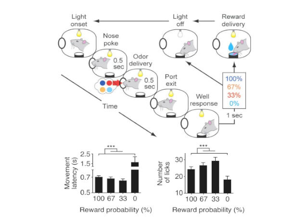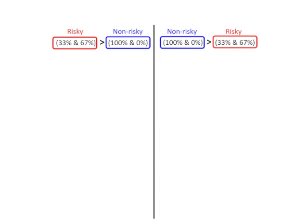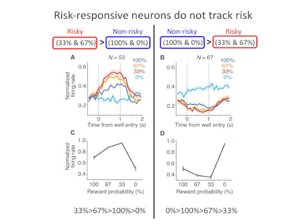We next tried to identify risk-responsive neurons during the one-second outcome anticipation period. Here, risk was defined as reward variance — thus risk for 100% and 0% reward was 0, while risk for 33% and 67% reward was the same, above 0. We collapsed activity across 100% and 0%, or across 33% and 67%, and then compared them. Population response of these risk-responsive neurons revealed that they do not actually track risk, because if they did, the responses to 100% and 0%, or 33% and 67%, should be the same.